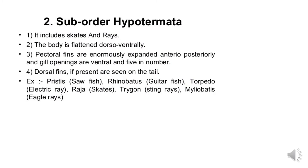The second sub-order is Hypotremata, which includes skates and rays. The body is flattened dorso-ventrally. Pectoral fins are enormously expanded anteriorly and posteriorly. Gill openings are ventral and five in number. The body is dorso-ventrally flattened with ventral gill openings. The pectoral fin extends anteriorly. The dorsal fin is present on the tail.